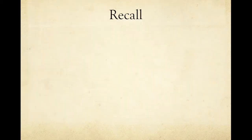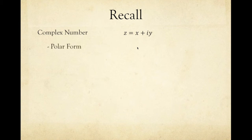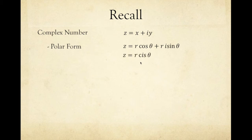In order for us to do this, we need to recall complex numbers. In Cartesian form, that is x plus iy. In polar form, it is r cosine theta plus ri sine theta, or in short, r cis theta, wherein r is the modulus and theta is the argument.